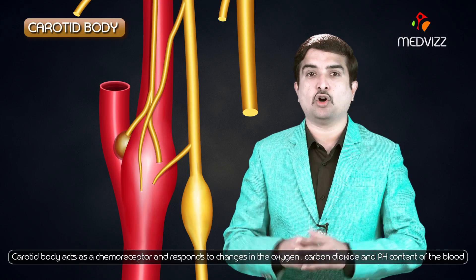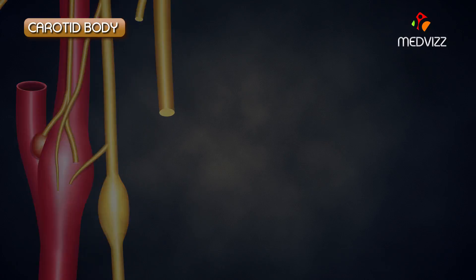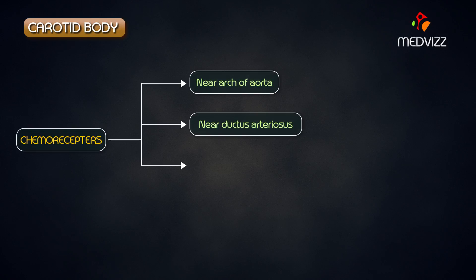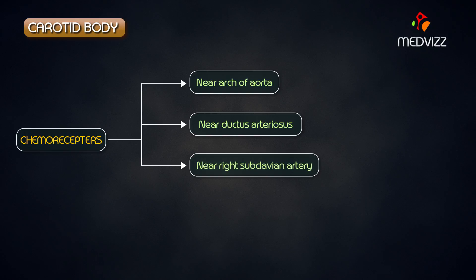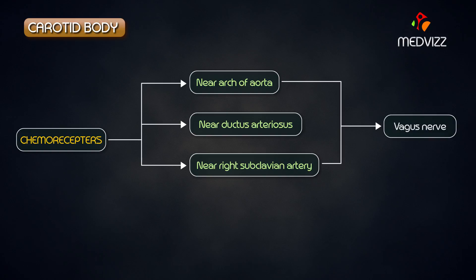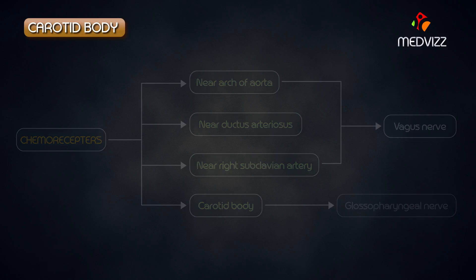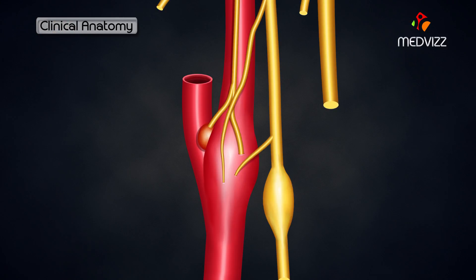as well as pH content of the blood. There are other allied chemoreceptors found near the arch of the aorta, the ductus arteriosus, as well as the right subclavian artery, and all these are supplied by the vagus nerve, while the carotid body is supplied by the glossopharyngeal nerve.